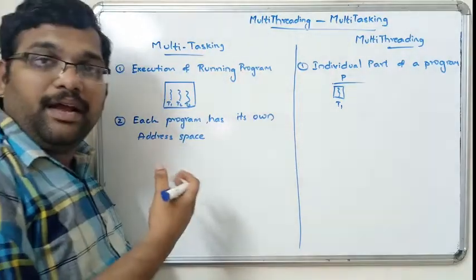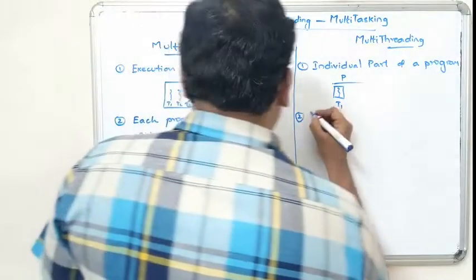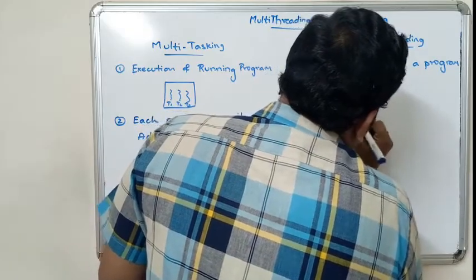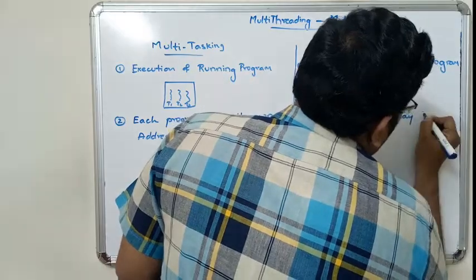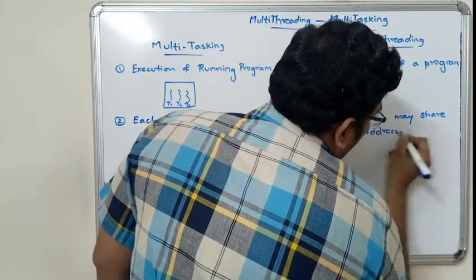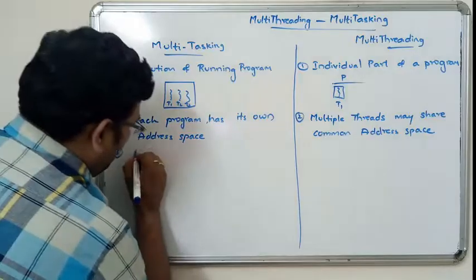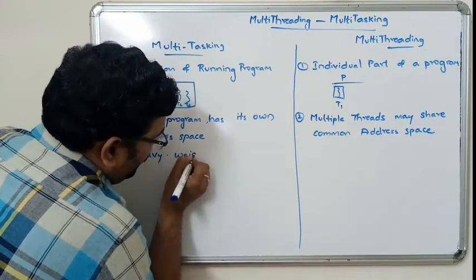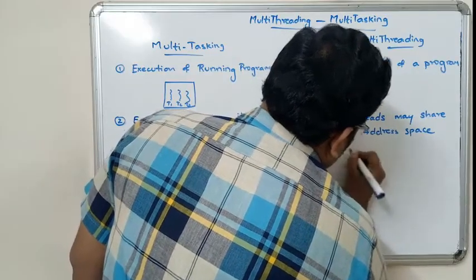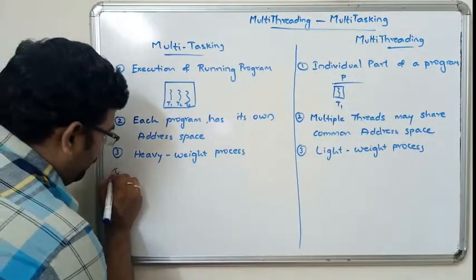In multitasking, each program has its own address space. But in multithreading, a thread is an individual part of a program, so multiple threads may share a common address space. Because a program is a collection of multiple threads, multitasking is called a heavyweight process and multithreading is called a lightweight process.